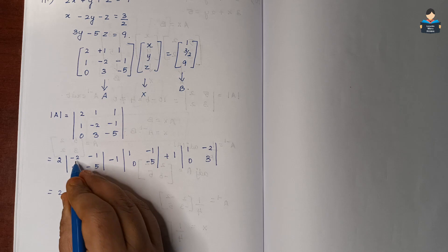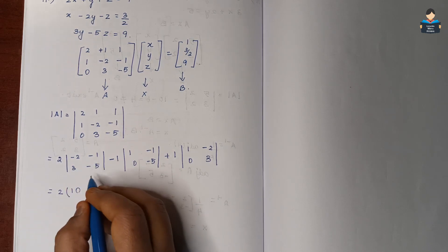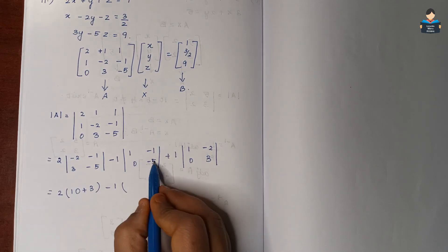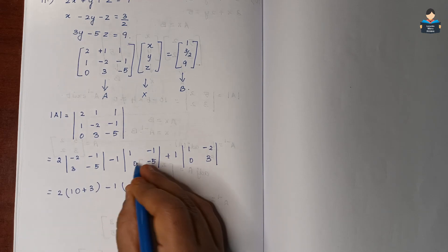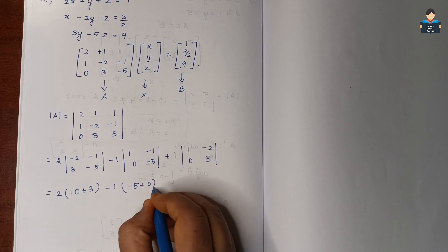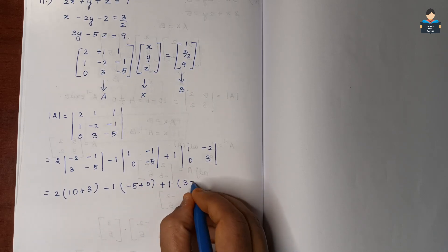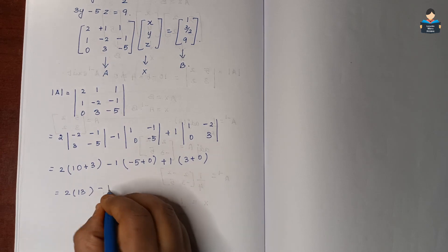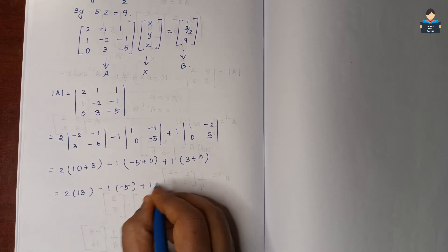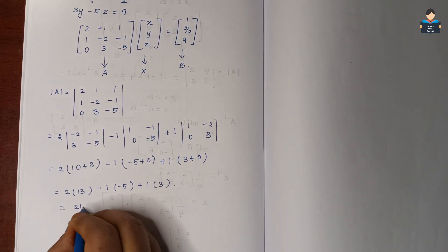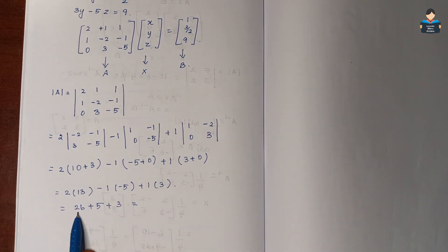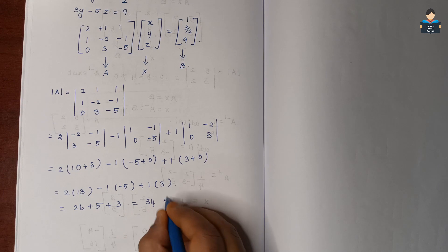So det(A) = 2×13 minus 1×(-5) plus 1×3 = 26 + 5 + 3 = 34. Since det(A) = 34, which is not equal to 0, A-inverse exists.